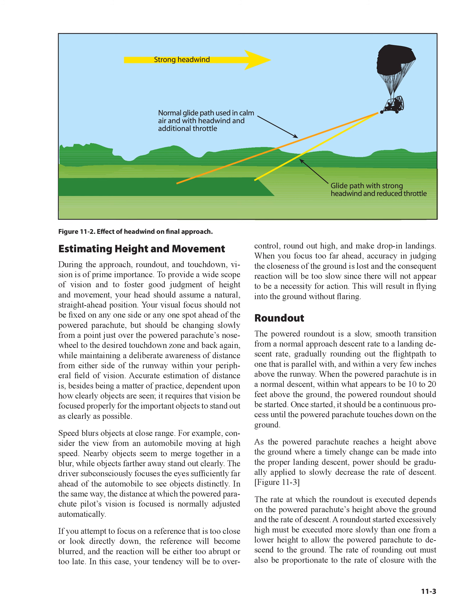Accurate estimation of distances, besides being a matter of practice, depends upon how clearly objects are seen — it requires that vision be focused properly for the important objects to stand out as clearly as possible. Speed blurs objects at close range. For example, consider the view from an automobile moving at high speed: nearby objects seem to merge together in a blur, while objects farther away stand out clearly. The driver subconsciously focuses the eyes sufficiently far ahead to see objects distinctly.